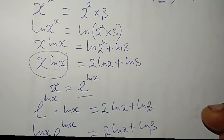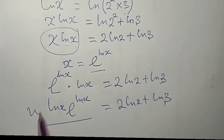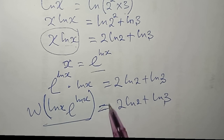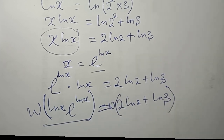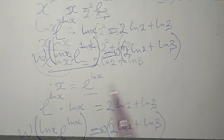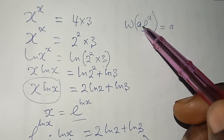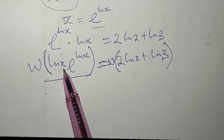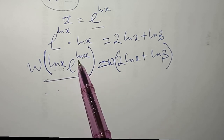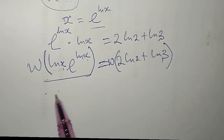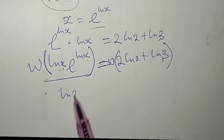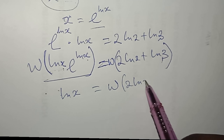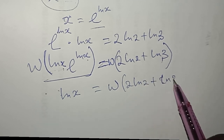Now I can apply the Lambert W function to both sides. On the left, W(ln(x) · e^(ln x)) collapses to ln(x), since ln(x) is playing the role of a. So I get: natural log of x equals W(2·ln(2) + ln(3)).